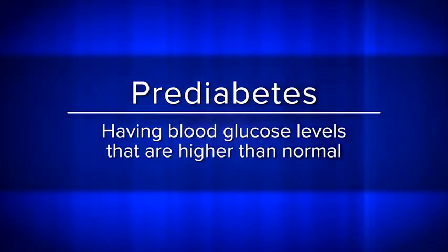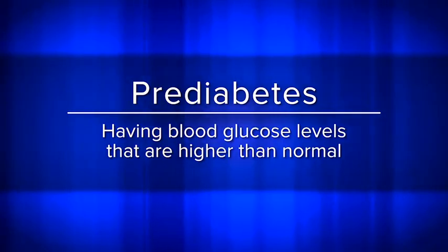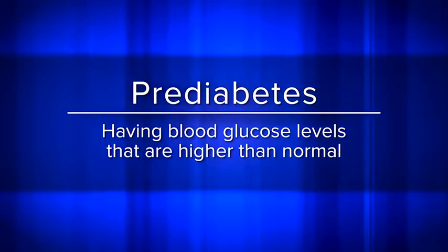Prediabetes means having blood glucose levels that are higher than normal but not high enough to diagnose as type 2 diabetes. Like metabolic syndrome, prediabetes increases a person's risk for progressing to type 2 diabetes. Now, that progression can be significantly reduced if a person with prediabetes makes appropriate changes to their diet and physical activity.